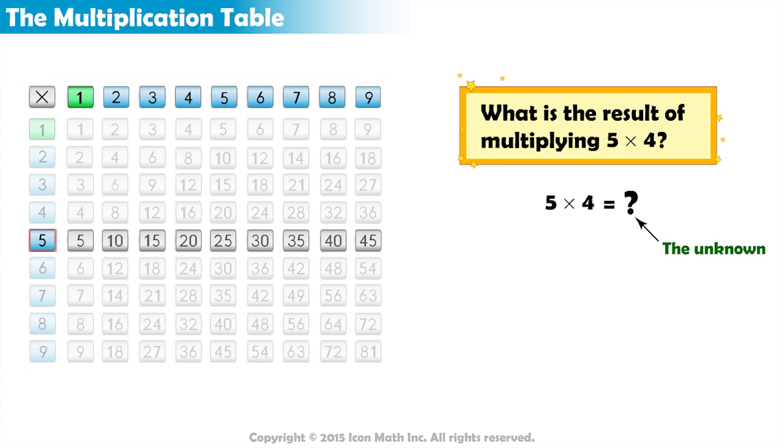If we start at row 5 and move across 4 columns to the right, we get to 20. Now, we replace the unknown in our equation with 20.